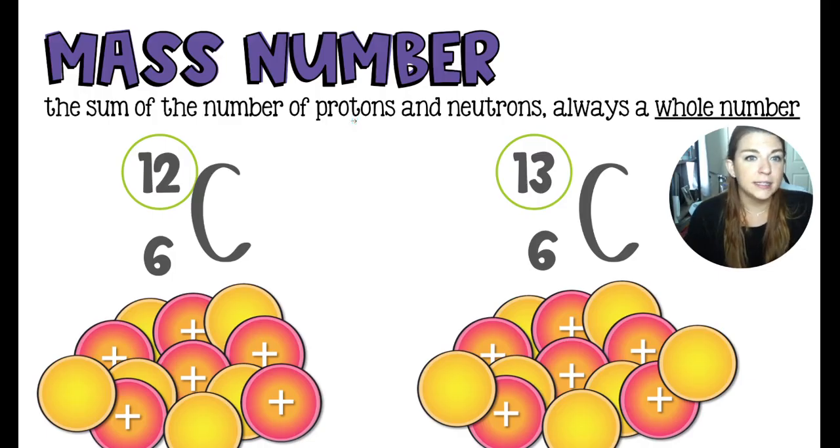Now the mass number is the sum of the protons and the neutrons, and it's always represented as a whole number. The reason for that is because we can't have half a proton or half a neutron. They only come in wholes.